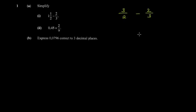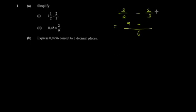Then you subtract two over three. Once we have improper fractions, we find the common denominator — the lowest common multiple of the denominators. For two and three, the LCM is six. Two into six gives three, times three gives nine. Three into six gives two, times two gives four. So nine minus four gives five over six.